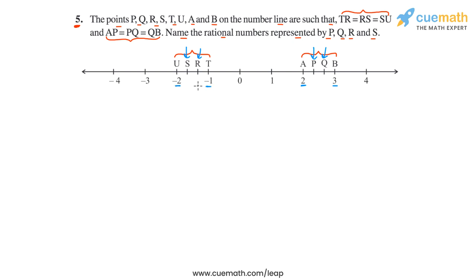Since each interval is being divided into three equal parts, let's write the integers at the end points of these intervals as rational numbers with denominator 3. So we can write minus 2 as minus 6 by 3, and we can write minus 1 as minus 3 by 3.